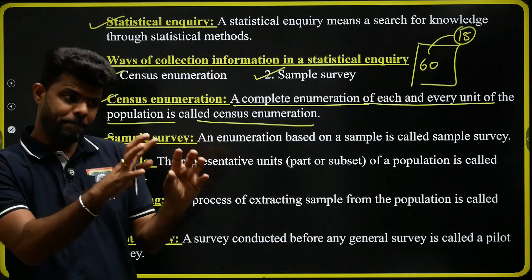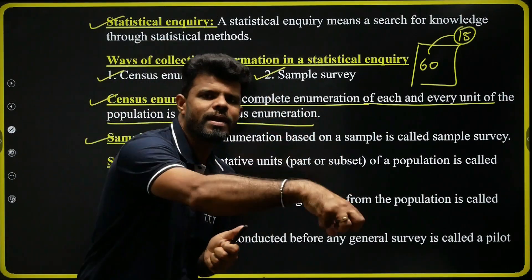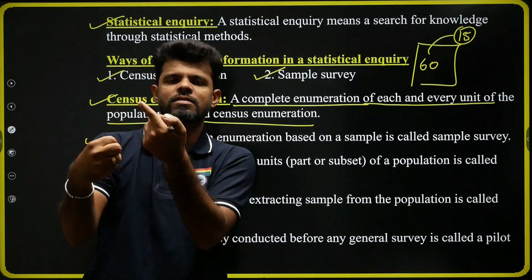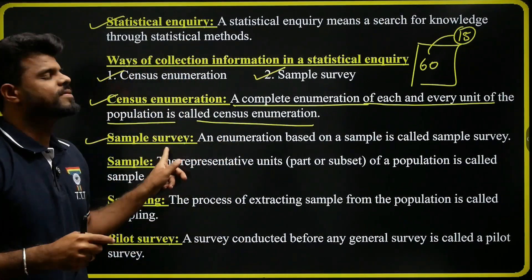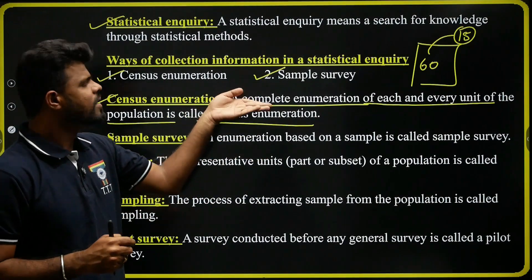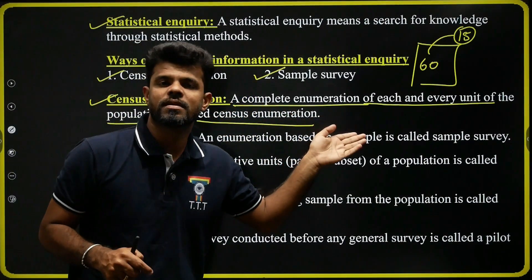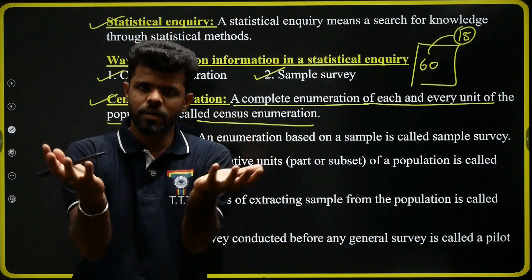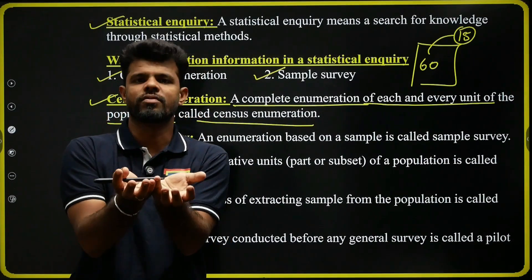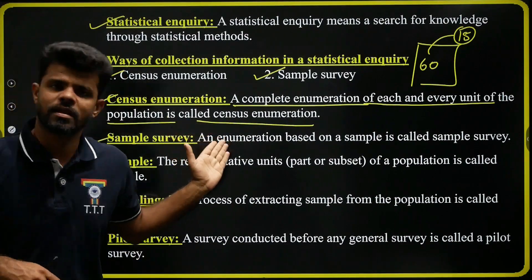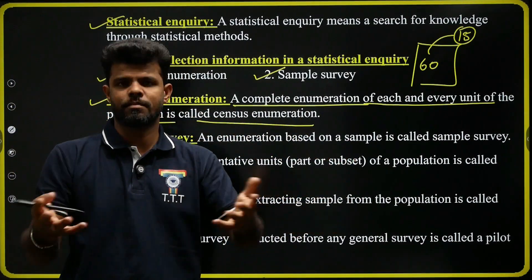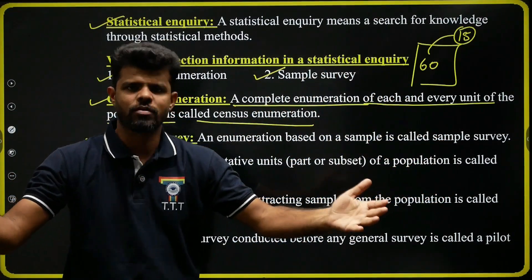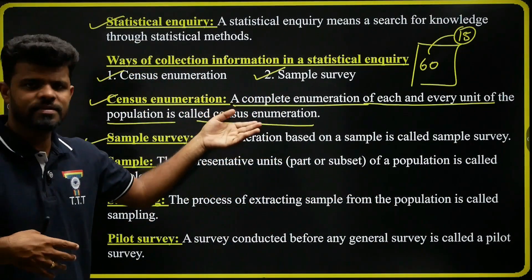Sample survey is a complete enumeration of each and every unit in the selected sample. That is the difference between census enumeration method and sample survey. Census enumeration method is used only when the population has a finite and countable number of units. If the population has an infinite number of units, then we have to apply the sample survey method.